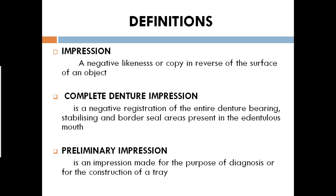A complete denture impression is the negative registration of the entire denture-bearing area. Once the teeth are lost, only the oral mucosa will be present on the ridges — the denture-bearing area where the denture lies. The stabilizing structures such as the ridge and supporting area, and the border seal or vestibular area, are also present and must be recorded.